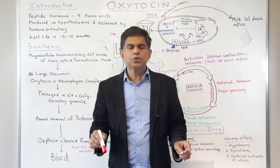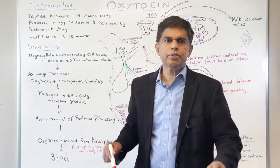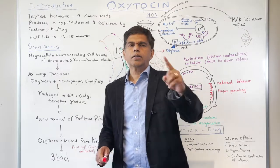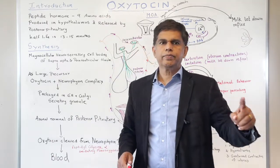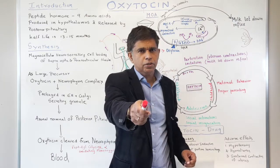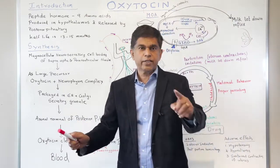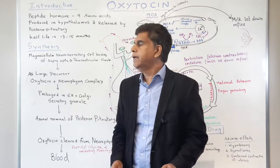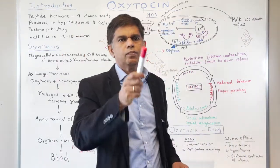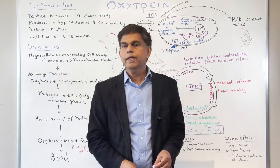We're going to start each one. Today our goal is to look at the posterior pituitary hormone — we start with oxytocin. Our goal is to teach you everything about oxytocin; by the end of this lecture, you will be an expert. Oxytocin is a peptide hormone with about 9 amino acids.